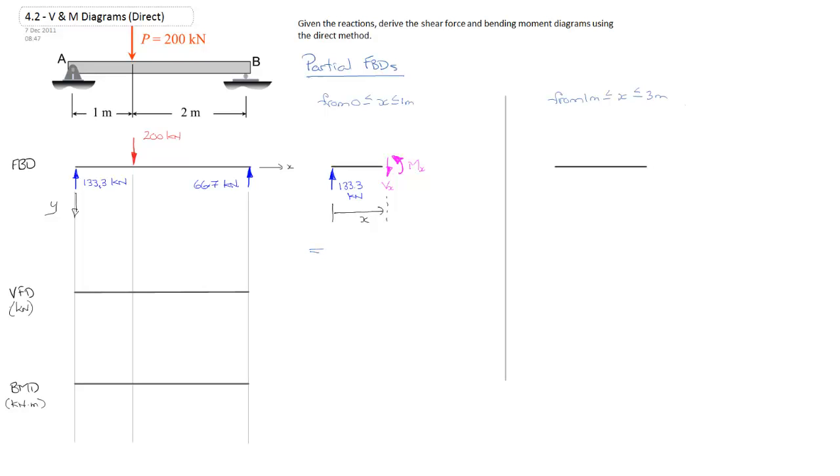And for the shear force diagram, we have to solve sum of the forces in the y direction equals 0, which is equal to, in this case, we have 133.3 kilonewtons going up and v at x going down. And we rearrange that to v at x is equal to 133.3 kilonewtons.